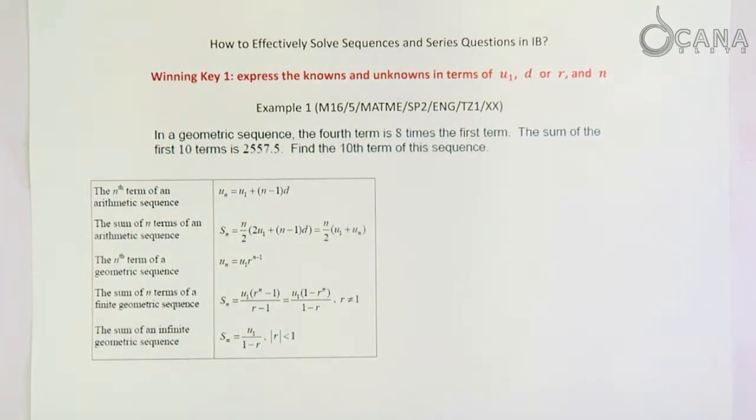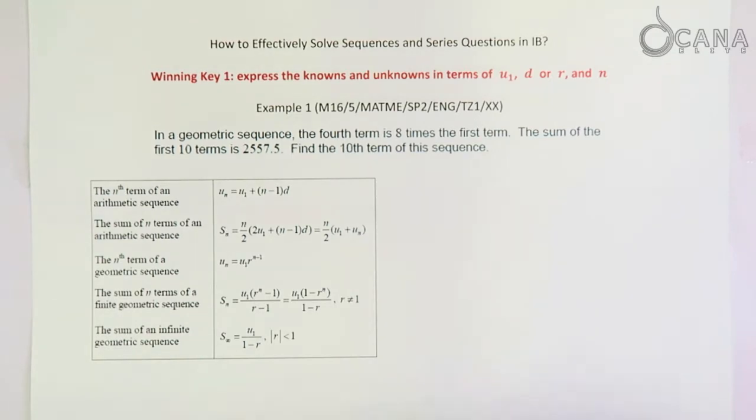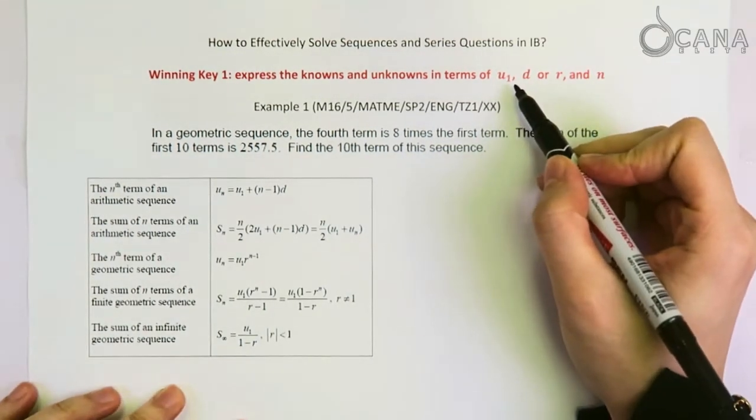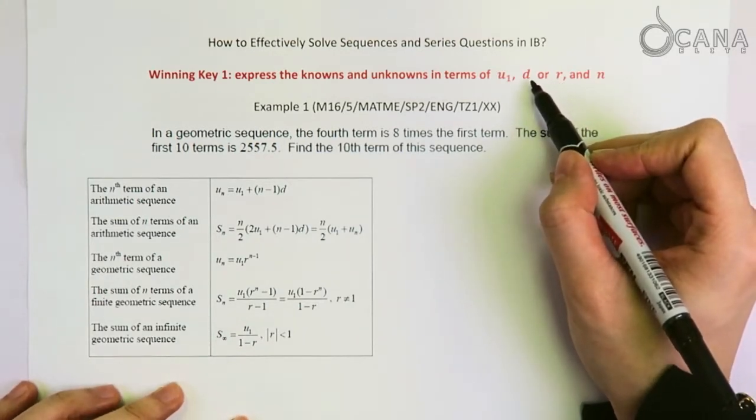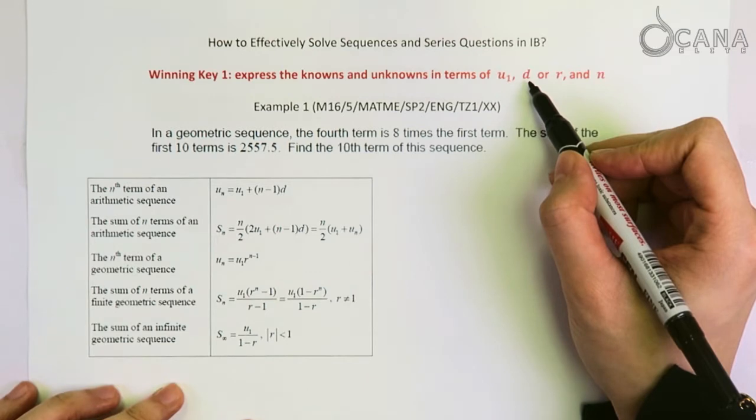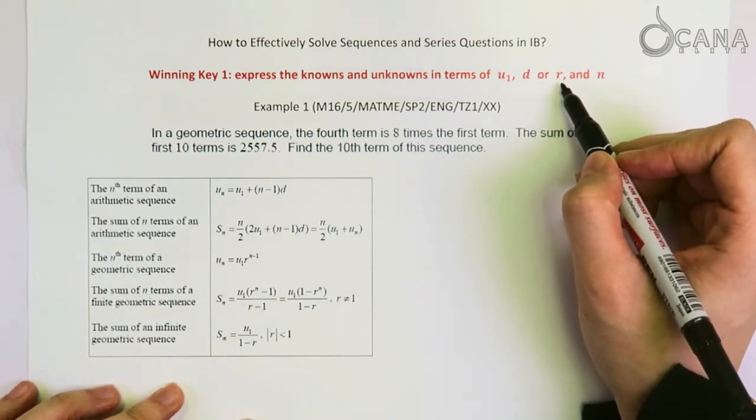The first winning technique is to express the knowns and unknowns in the question in terms of three quantities. These three quantities are U1, the first term, and then the common difference or the common ratio, depending on whether you are dealing with an arithmetic sequence question or a geometric sequence.